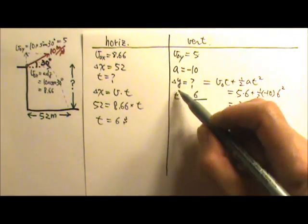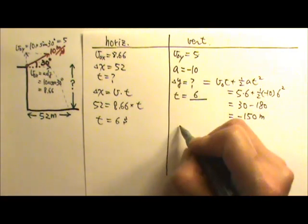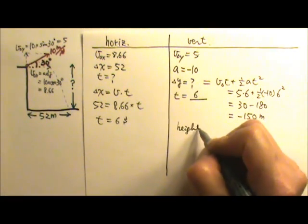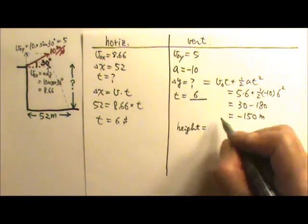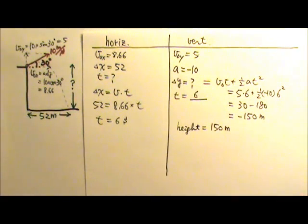So this vertical displacement is a downward displacement. But of course, for the height of the cliff, it would just be 150 meters. Just drop the negative sign, and there you have the height.